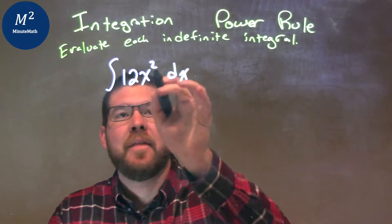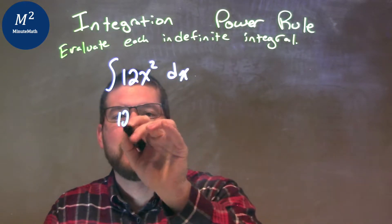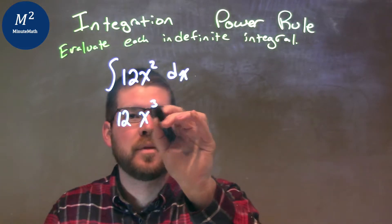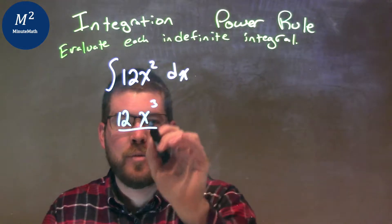power rule states, I add that exponent by 1. So I leave the constant up front, I take the exponent, and I add it by 1, so 2 plus 1 is 3. And then I divide by this new exponent, 3.